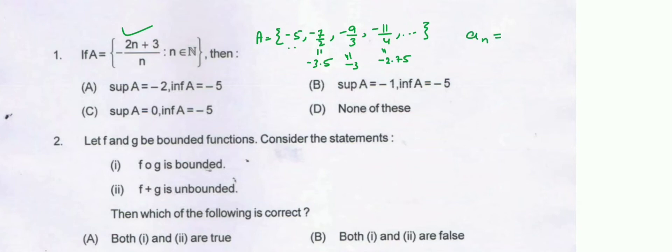We will form a sequence for aₙ = minus (2n+3)/n. This is equal to minus 2 minus 3/n.